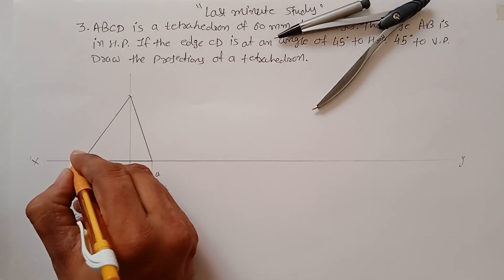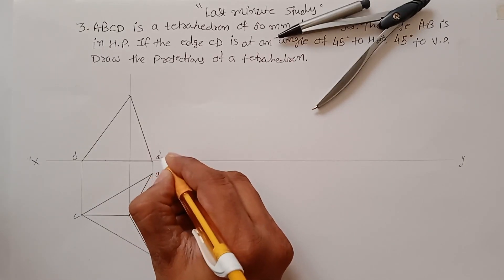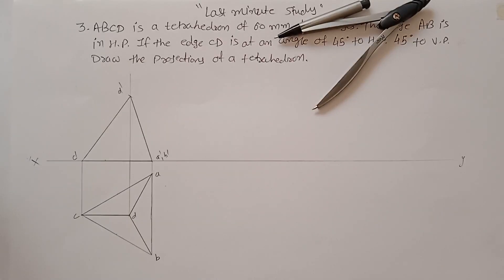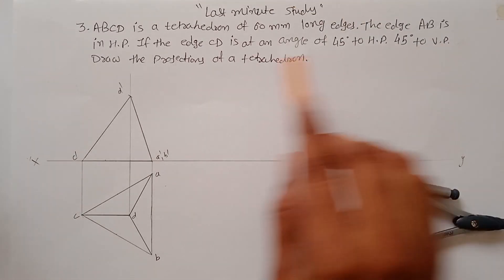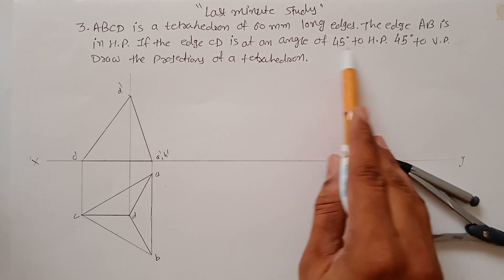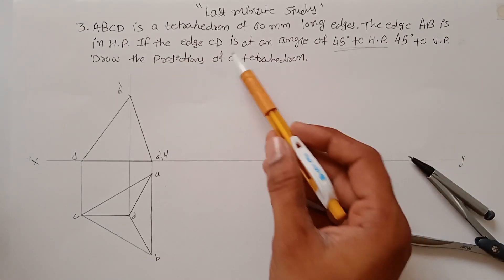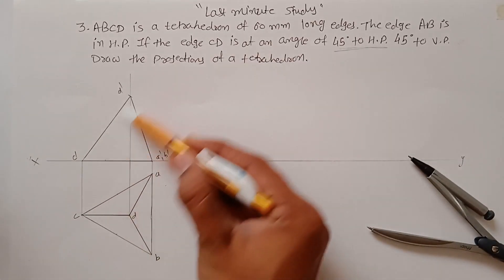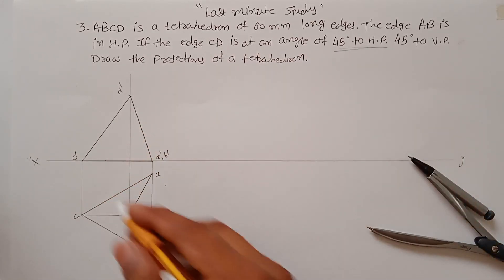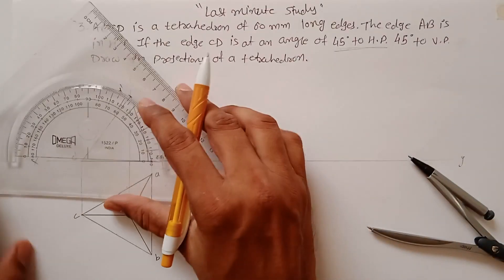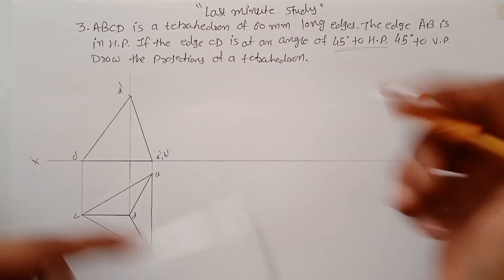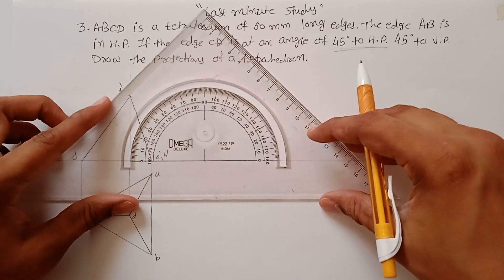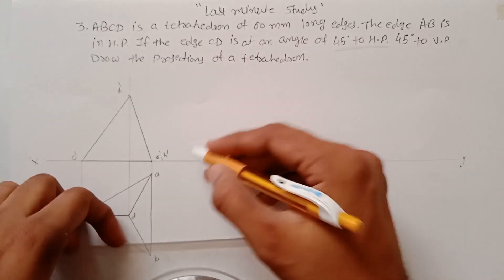This point is C-dash, this is A-dash B-dash, and this is D-dash — so this is the front view of the tetrahedron. Now for the second position: the edge CD is at an angle of 45 degrees to the HP, so this edge is making an angle of 45 degrees with the HP. You just need to mark anywhere and draw a line at an angle of 45 degrees.